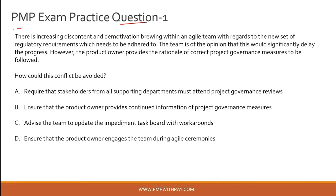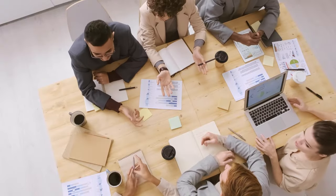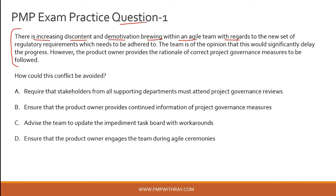Question number one: there is increasing discontent and demotivation brewing within an agile team regarding a new set of regulatory requirements that need to be added. Some new legislation has come in and there is tension within the agile team as it poses challenges to the project. The team believes this will significantly delay progress. However, the product owner provides the rationale of correct project governance measures to be followed — you cannot bypass any legislation or compliance in any project.